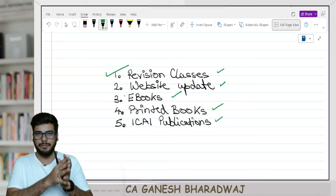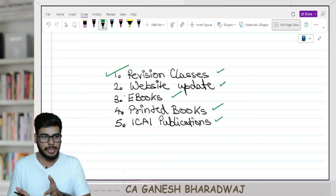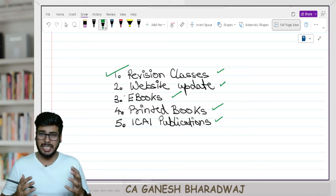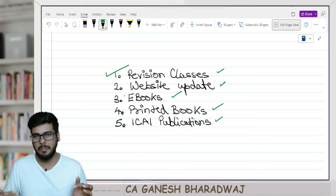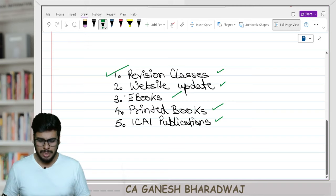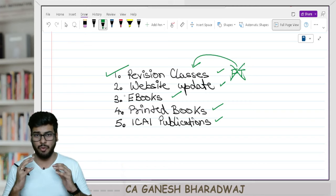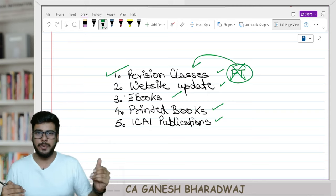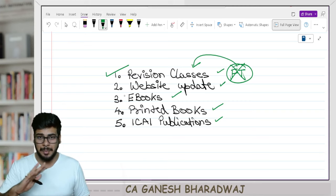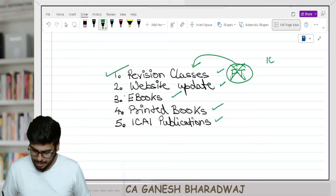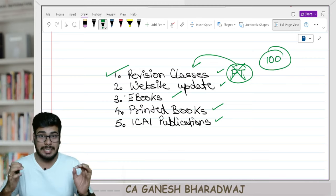The first agenda is regarding the revision class. Why did we stop fast track lectures and switch to revision lectures? And by revision lecture, I do not mean marathon. This is slightly more comprehensive than a marathon. Till the November 2023 attempt, that was still the old syllabus. In subjects like costing and FM, the entire paper was tested on a subjective basis — you had to do numerical problems; there was no MCQ.